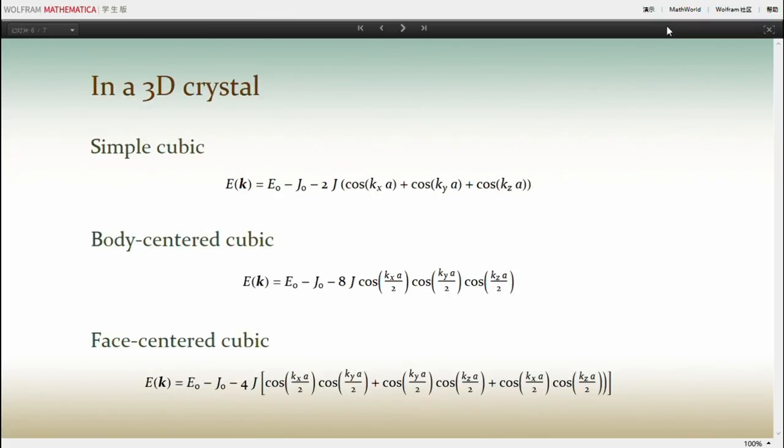In three-dimensional cases, the dispersion relations are more complicated. Let's now take a look at the dispersion relations of these three kinds of 3D lattices. For a simple cubic lattice, there are six nearest neighbors of one atom. So the sum has six components, and we can get the dispersion relation like this after simplifying.